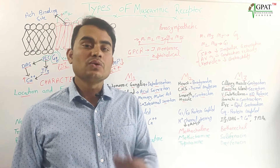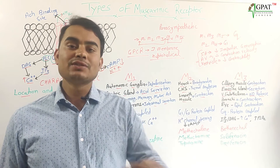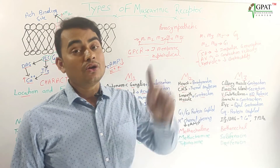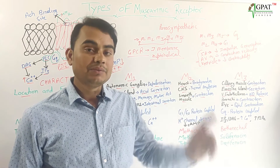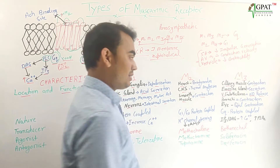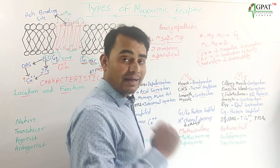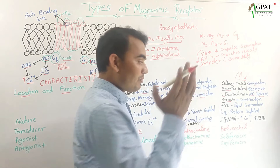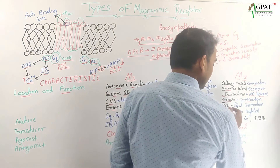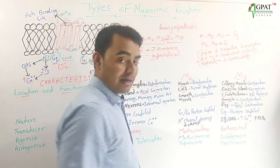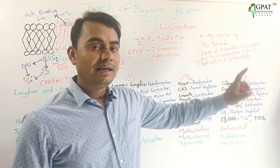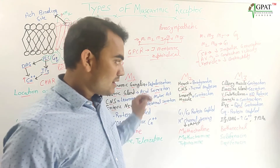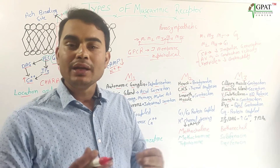When nitric oxide is released, it activates EDRF (endothelium-derived relaxing factor), which leads to vasodilation. So M3 receptors on small blood vessels have a vasodilatory action, while on large blood vessels they can cause contraction. On all visceral smooth muscles — including the bronchi — M3 receptors cause contraction. In the eye, on the iris, M3 receptors cause pupil constriction. These are the locations and functions of M1, M2, and M3 receptors.